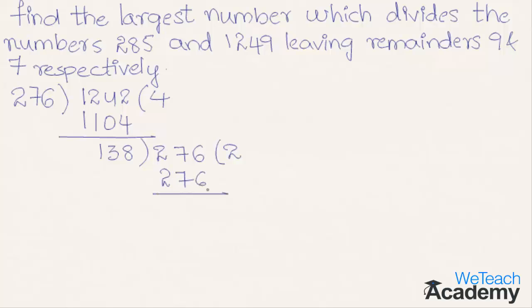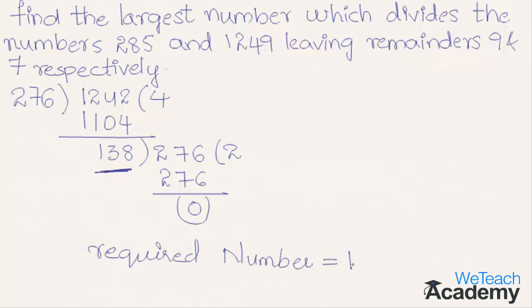So by subtracting we get the remainder 0. The last non-zero remainder, which is 138, is the greatest common divisor of 276 and 1242. Therefore, the largest number which divides 285 and 1249 leaving remainders 9 and 7 is 138. Hence the required number is 138.